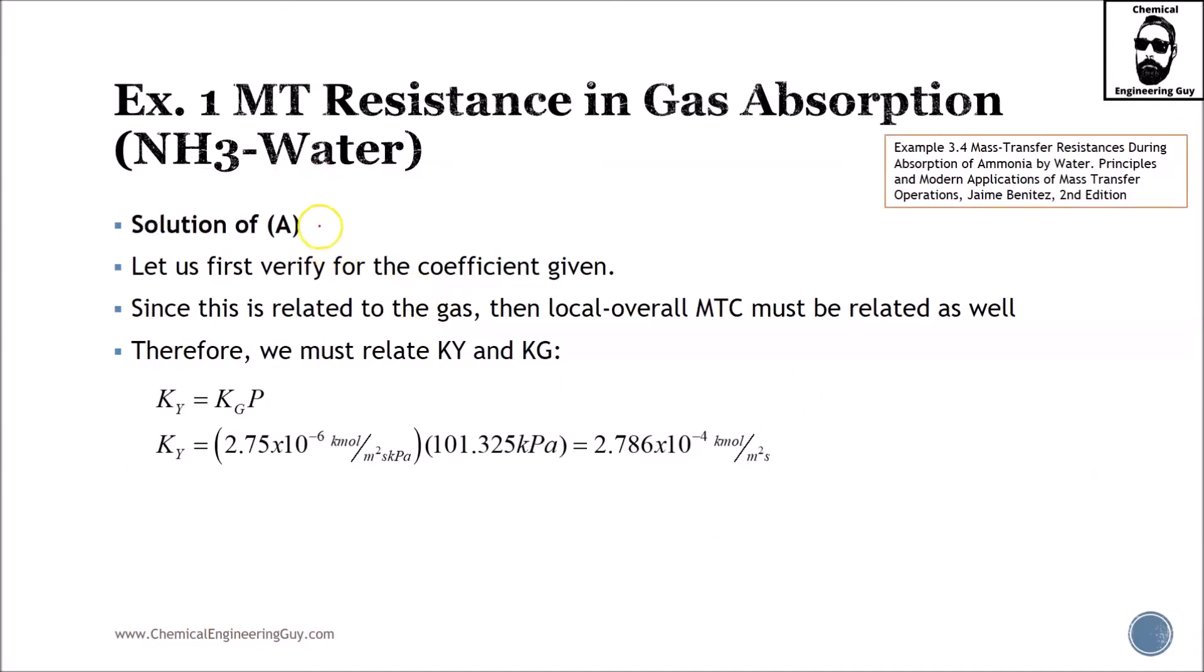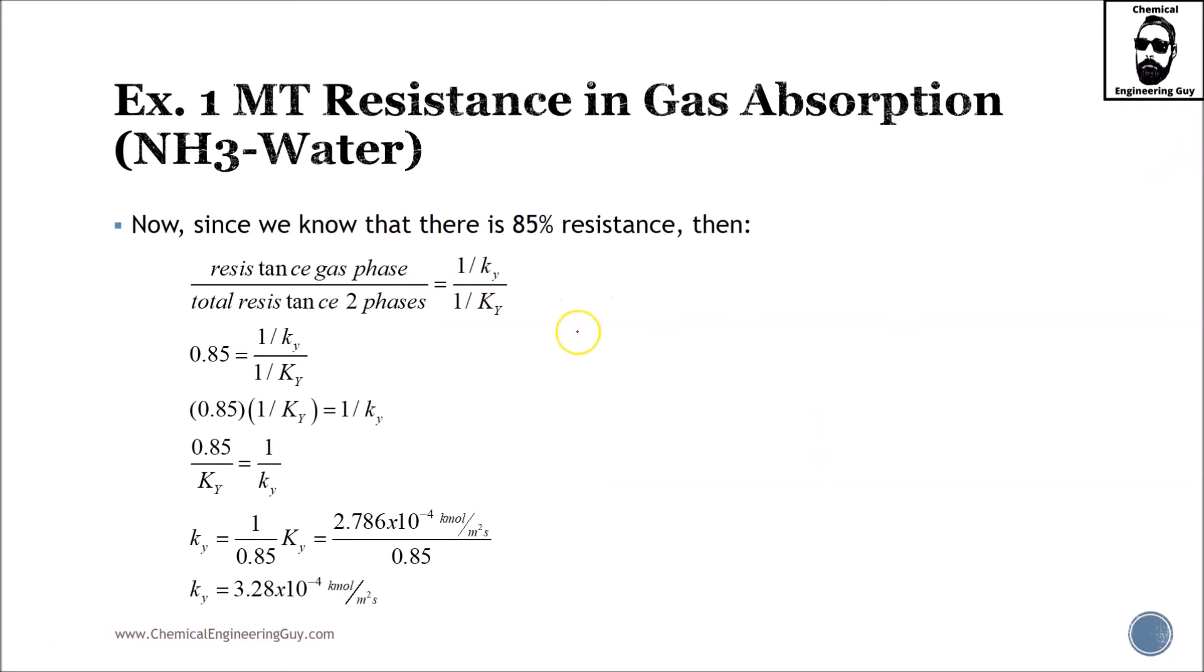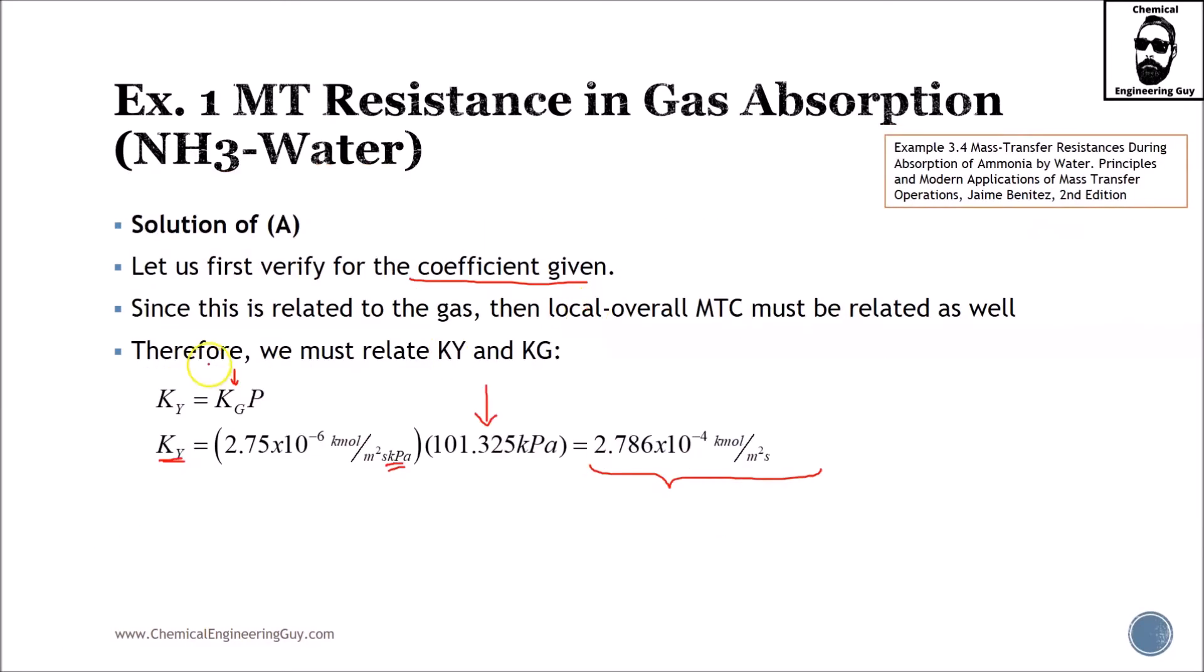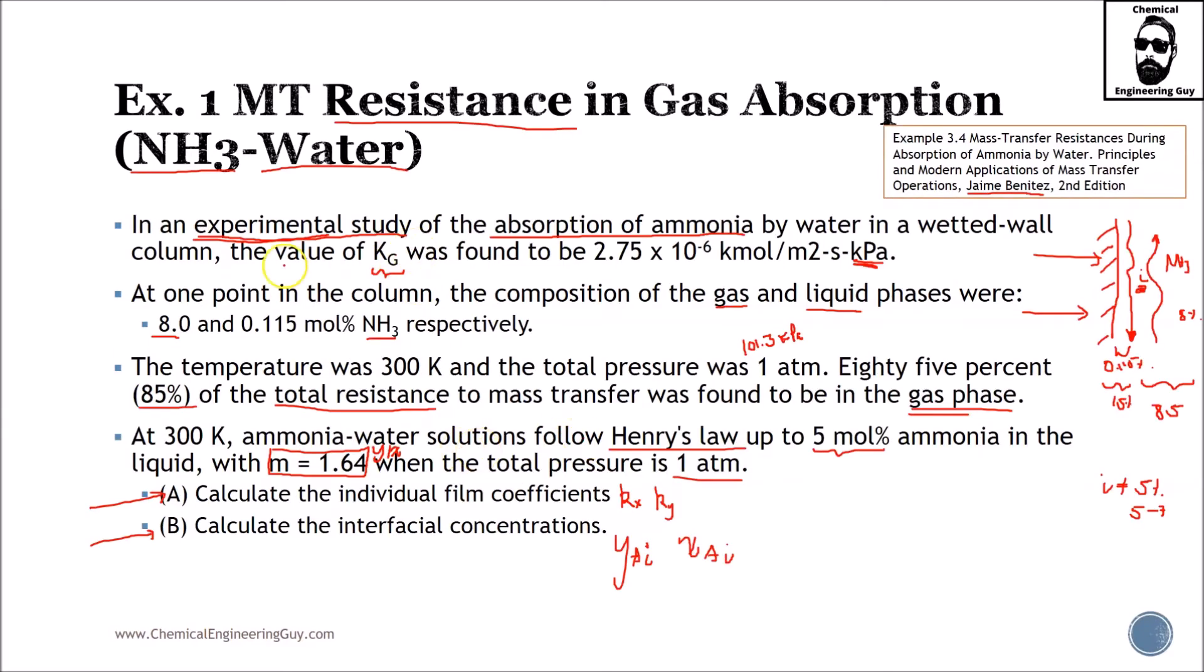The very first step will be to verify the coefficients given. Kg means this is the overall mass transfer coefficient given in pressure. A little tip: if you see pressure down, that means you need to multiply by pressure. We are given a pressure which is 1 atm or 101.3 kPa in order to obtain Ky, overall mass transfer coefficient in molar fraction in the gas phase. It's convenient because we are going to have a lot of mole fractions. We are not given partial pressures, and Henry's constant is typically given for fractions.